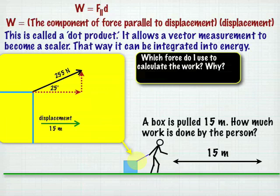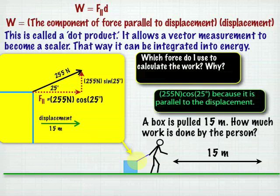Next, I need to know which view of force to use to calculate the work. So in this case, I'm just using the force that he's pulling with, but I need the component of the force that's parallel to the displacement. So that's going to be the 255 newtons cosine 25. And again, that's because it's parallel to the displacement.